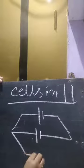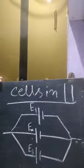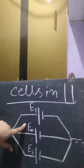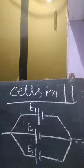Consider three cells E₁, E₂, and E₃ connected in parallel, with internal resistances R₁, R₂, and R₃ respectively. The potential difference between terminals A and B is V. Each cell contributes current — I₁ from E₁, I₂ from E₂, and so on. The individual currents are: I₁ = (E₁ − V)/R₁ and I₂ = (E₂ − V)/R₂.